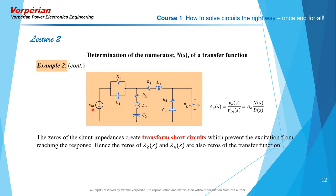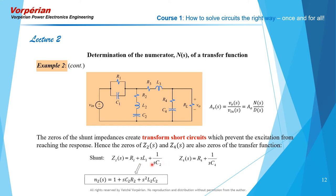Each shunt element, when evaluated at its own zero, acts as a transform short circuit. Those short circuits will siphon all the transform current generated by the source independently of each other — giving two independent conditions that prevent the excitation from reaching the response. For the first shunt impedance, you normalize it and get the numerator factor — that's the first factor of N of s. Factor the second one properly and find its zero — you have the second factor. It is a simple zero and a complex zero pair, depending on the damping provided by R2.